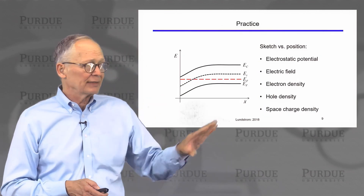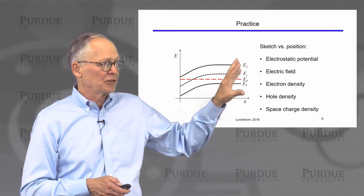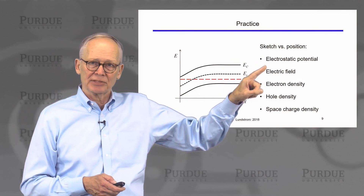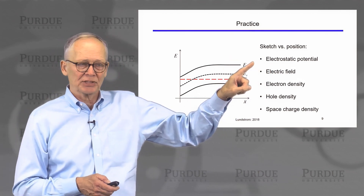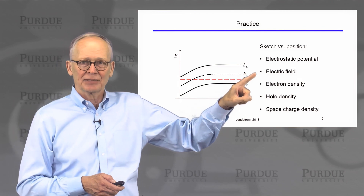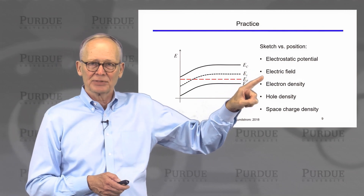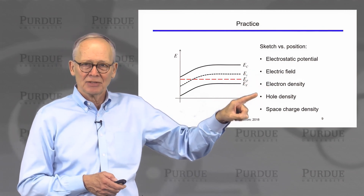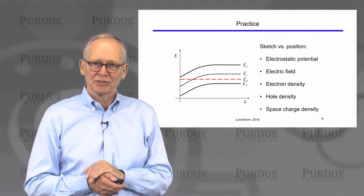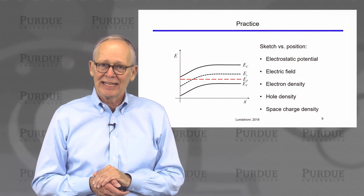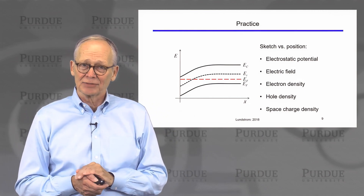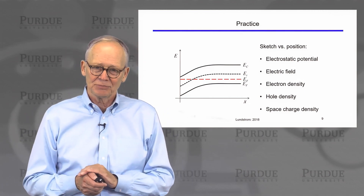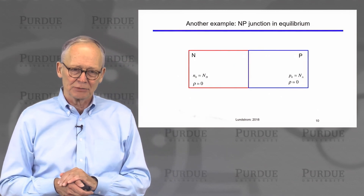For practice, take this energy band diagram and make a sketch of the electrostatic potential versus position, the electric field versus position, the electron density versus position, the hole density versus position, and the space charge density versus position. See if you can do that as a review.